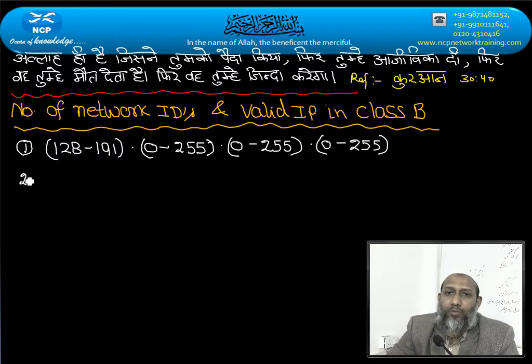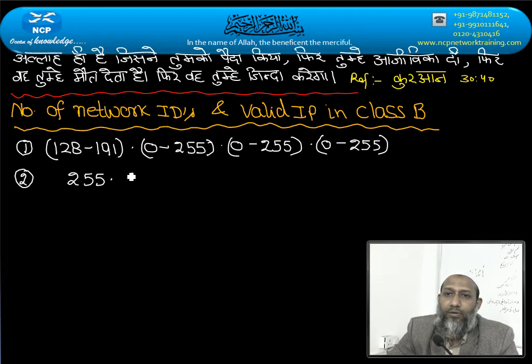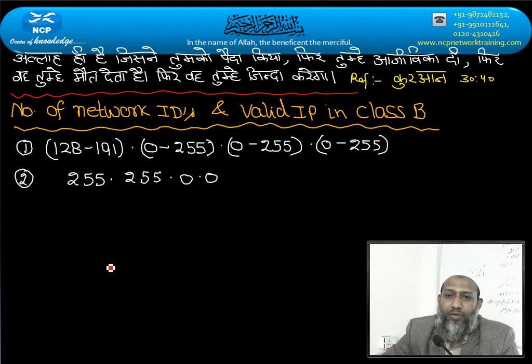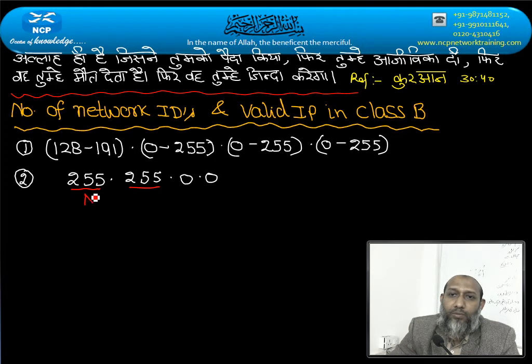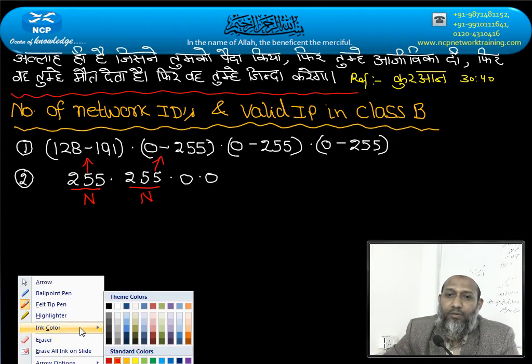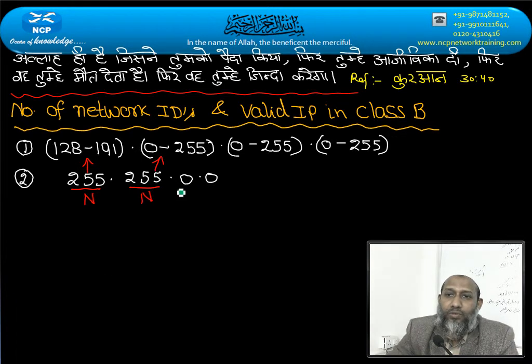Step number two, this mask is class B, that is 255.255.0.0. In this case, number of network, you can represent this. 255 is representing the network portion. So, number of hosts, you have two octets.